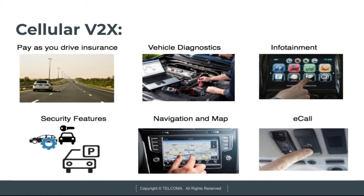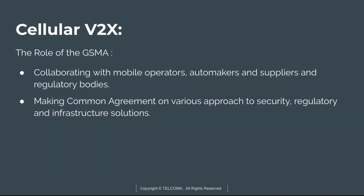Cellular V2X provides several benefits to drivers. The first is pay-as-you-drive insurance per mile — drivers only pay insurance while actually driving. Other benefits include vehicle diagnostics, security features, navigation and maps, and e-calling. The e-call is a European initiative intended to bring rapid assistance to motorists involved in a collision anywhere in the EU, and was made mandatory in all new cars sold within the EU from April 2018.